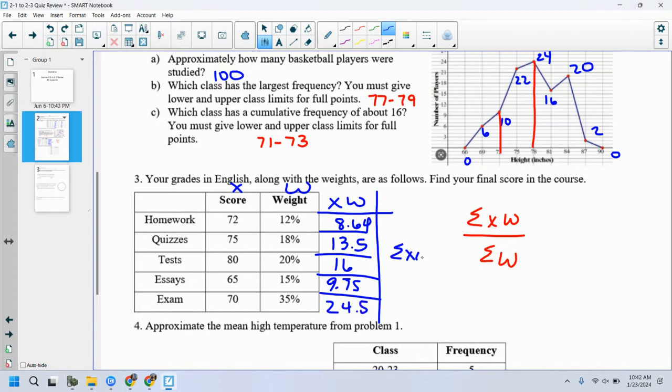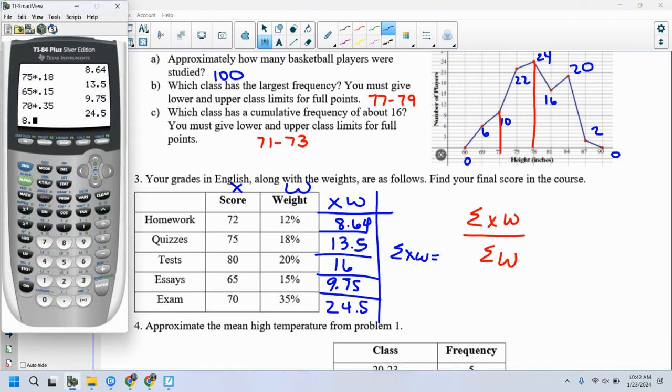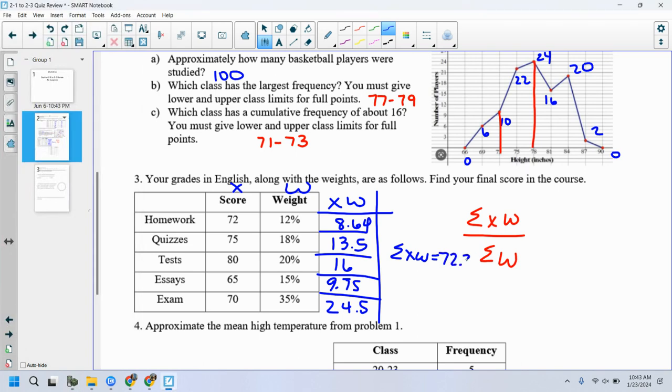Okay. So all said and done, sum of X times W is going to be 8.64 plus 13.5 plus 16 plus 9.75 plus 24.5. Let's see if I missed. 8.64, 13.5, 16, 10.7. Okay. Yeah. 72.39. Now I would divide by sum of W, but because I made my weights a decimal, I add up all of my weights. I would get one, just divide by one. And there's 72.39. If you had used your percentages and said 72 times 12, you had 864 through 1,350, so a hundred and so on, you would just divide by a hundred in the end, right? Because you add up all of your weights, you would get a hundred.